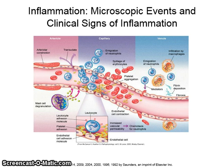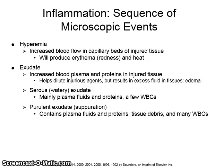See figure 2-1 on page 36 of your textbook for a graphic demonstration of the inflammatory response sequence. Hyperemia is an increased blood flow in the capillary beds of injured tissue, resulting in erythema or redness and heat. Increased blood plasma and proteins then leak out of injured tissue, which is called exudate.